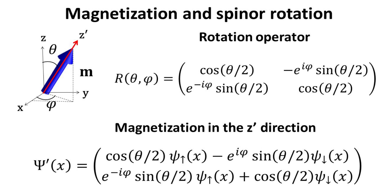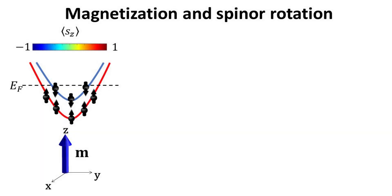Hence the spinor wave function for a magnetization along the z' axis can be explicitly written as a linear combination of the spinor wave function components of the unrotated z-axis. To understand how the rotation of the magnetization affects spin states at the band structure level, we use the simple model for a ferromagnetic metal shown here. The bands are color-coded according to the expectation value of the z-component of the spin operator. When the magnetization is along the z-direction, we only have spin states along z and minus z, so the bands are either completely blue or completely red.